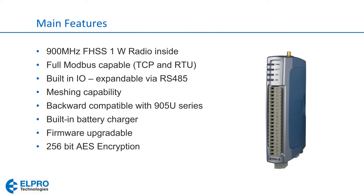The 915U2 has full Modbus capability, so it can act as the Modbus RTU master or slave, and it can also do Ethernet Modbus — Modbus TCP — by acting as the Modbus server or the Modbus client. It has built-in I/O that we're going to talk about in just a few minutes, and if this I/O is not enough, it can be expanded via RS-485.